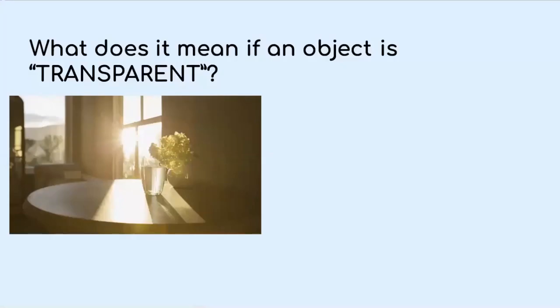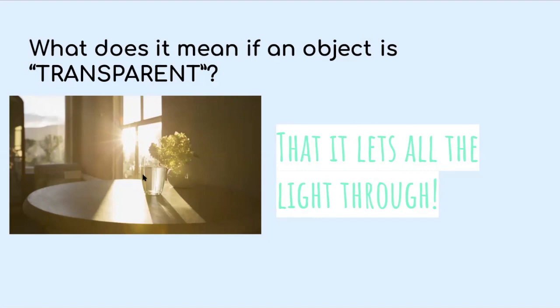What does it mean if an object is transparent? That picture is giving you a good hint. What does it mean if an object is transparent? That it lets all the light through, right? Windows are transparent. Glasses are transparent. Lets all the light through.